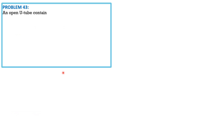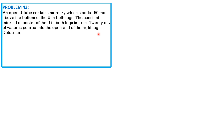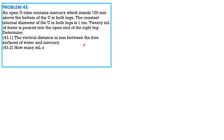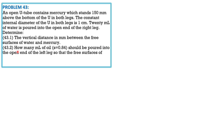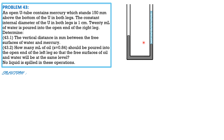Problem 43: An open U-tube contains mercury standing 150 mm above the bottom in both legs. The constant internal diameter of both legs is 1 cm. 20 mL of water is poured into the open end of the right leg. Determine (43.1) the vertical distance in millimeters between the free surfaces of water and mercury, and (43.2) how many milliliters of oil of specific gravity 0.84 should be poured into the open end of the left leg so the free surfaces of oil and water are at the same level.